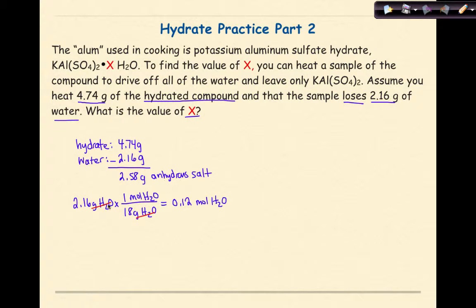After converting water to moles, the next step is converting the anhydrous salt mass to moles. 2.58 grams KAl(SO4)2 times 1 mole KAl(SO4)2 over 258 grams—the gram formula mass of KAl(SO4)2. Units cancel: 2.58 times 1 divided by 258 gives 0.0099 moles of KAl(SO4)2.